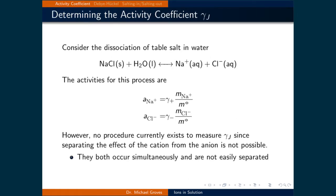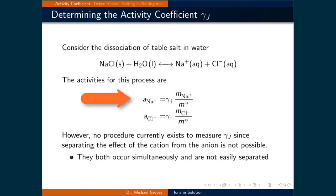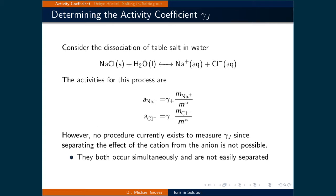Now consider the dissociation of table salt in water: NaCl solid in liquid H₂O is in equilibrium with Na⁺ aqueous and Cl⁻ aqueous ions. The activities for this process include the activity for the sodium ion being gamma plus times the molality of the sodium ion divided by the standard molality, and the activity for the chlorine ion is gamma minus times the molality of the chlorine ion divided by the standard molality. In order to calculate the activities, we need to know the concentration and the activity coefficients. However, no procedure currently exists to measure gamma plus or gamma minus, since separating the effect of the cation from the anion is not possible — they both occur simultaneously and are not easily separated.